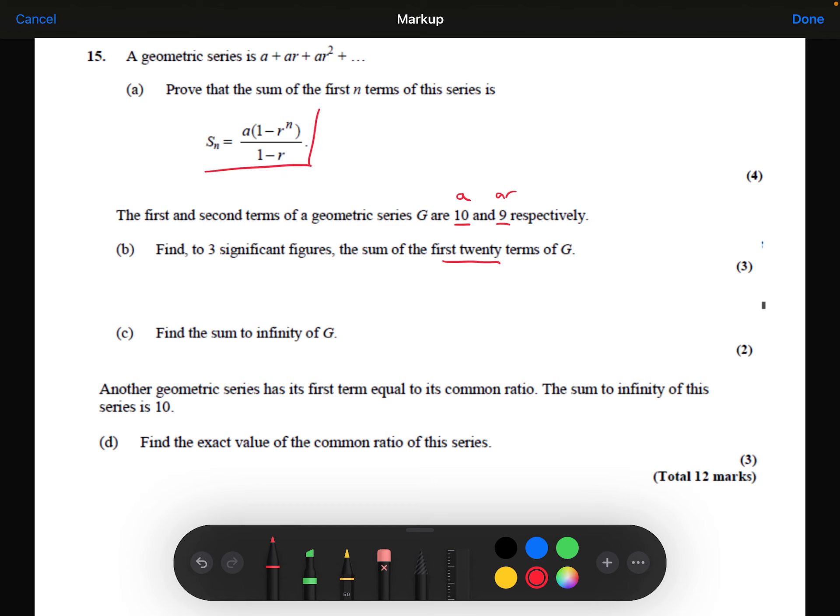So we're going to be using this formula to do this. We already know what A is. I can work out what R is, because I know that 10 multiplied by R gives 9. So 10R equals 9. So R is 9 over 10, or 0.9. So our first term is 10. Our common ratio is 0.9. And we want the sum of 20 terms.